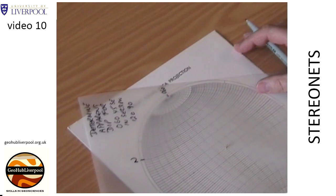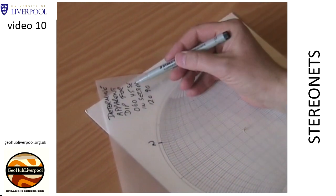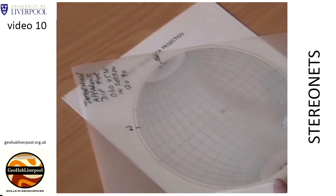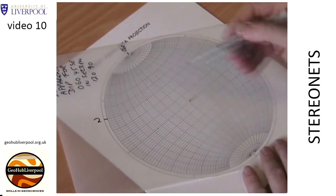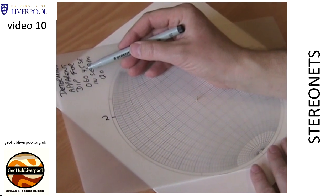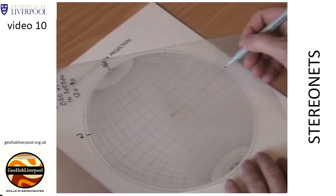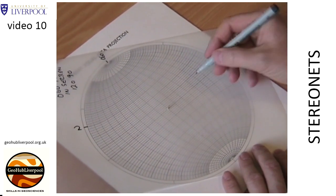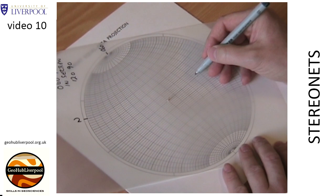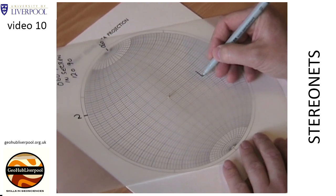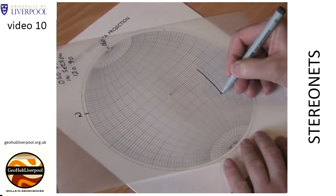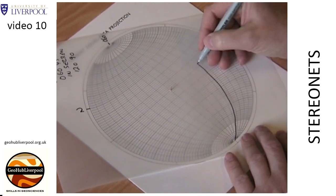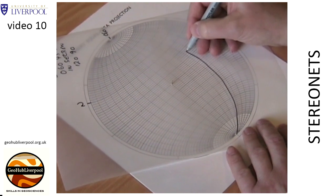Rotate the tracing paper so this mark lies on the north pole of the stereonet. The plane dips at 45 degrees towards the southeast, so find the correct section of the equator and count 45 degrees along the equator from the primitive circle towards the center of the stereonet. Remember heavy lines are at 10 degrees and subdivisions are at 2 degrees. Mark the point where the dip is 45 degrees towards the southeast, then hold the tracing paper in place and draw the great circle that this point lies on.